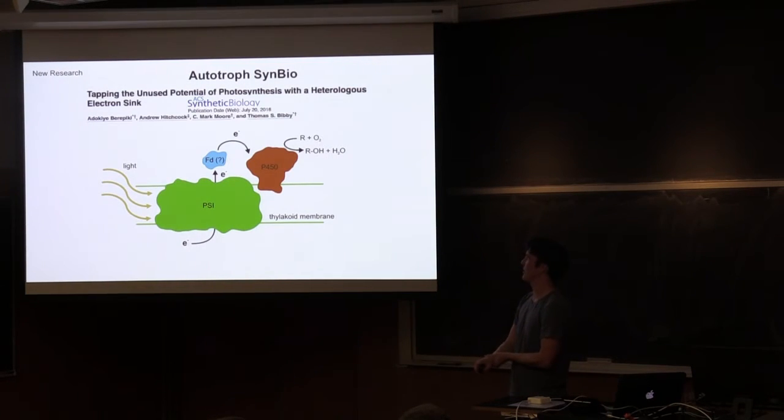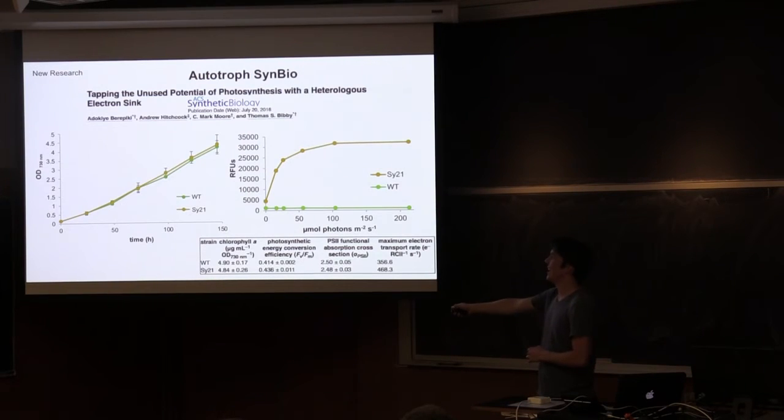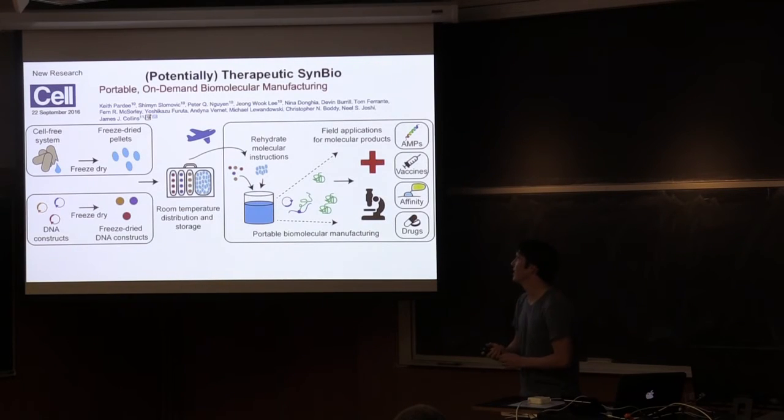So, in autotroph synthetic biology, I thought that was really cool. This lab was actually able to make photosynthesis a little more efficient. So, it turns out that photosynthesis is limited by rubisco, the carbon dioxide incorporating enzyme. And, it's so slow that you wind up with a ton of extra reducing power from the light-driven reactions, that just gets wasted. And, so, this lab added in this cytochrome, or this P450 enzyme, that can take some of that extra reducing power and convert it into desired molecules. And, because it's otherwise wasted energy, these new organisms show the exact same growth rate as the wild type. And, they are able to produce a bunch of this fluorescent small molecule product that's catalyzed. So, oh, and it also shows the photosynthetic energy conversion of the engineered ones is actually higher than the wild type, which is pretty cool.